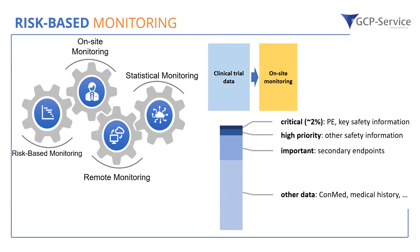It is very easy to rationalize that different data points should have different levels of importance when reviewing data. You would probably agree that primary endpoint data, or adverse event information, are much more important to data integrity, patient safety, and patient rights than, for example, concomitant medication, patient medical history, or a questionnaire on patient-reported outcome. So, if you naturally look at clinical trial data based on the impact of any issues identified, I think you'd find it easy to dissect them into different categories: critical data, data important for the trial, and then a lot of other data.